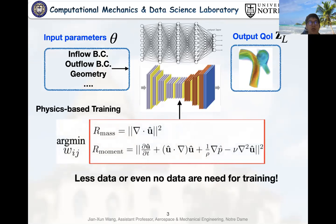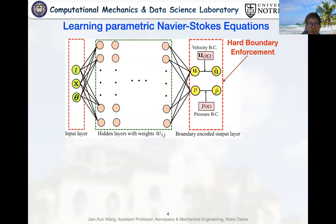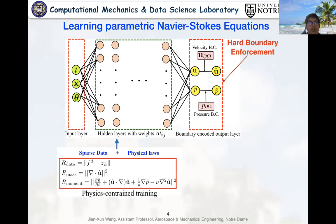Luckily, in most situations, the governing PDE for physics system is already known. Therefore, we can leverage these physical laws to train the deep learning model in small data regimes and then enjoy the fast online evaluation speed. This is the idea of physics-informed or physics-constrained learning.